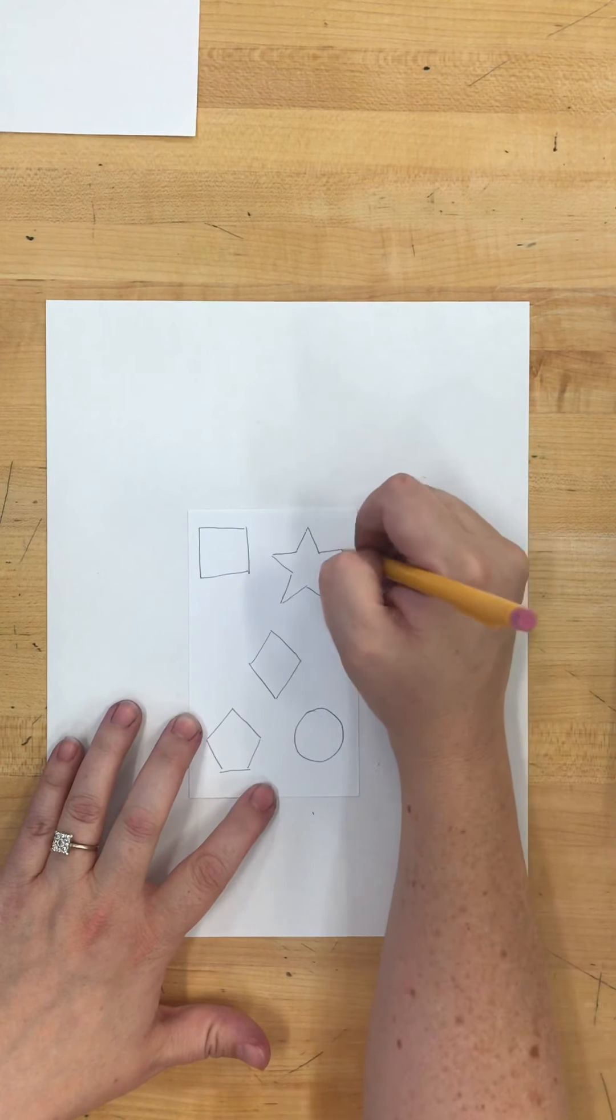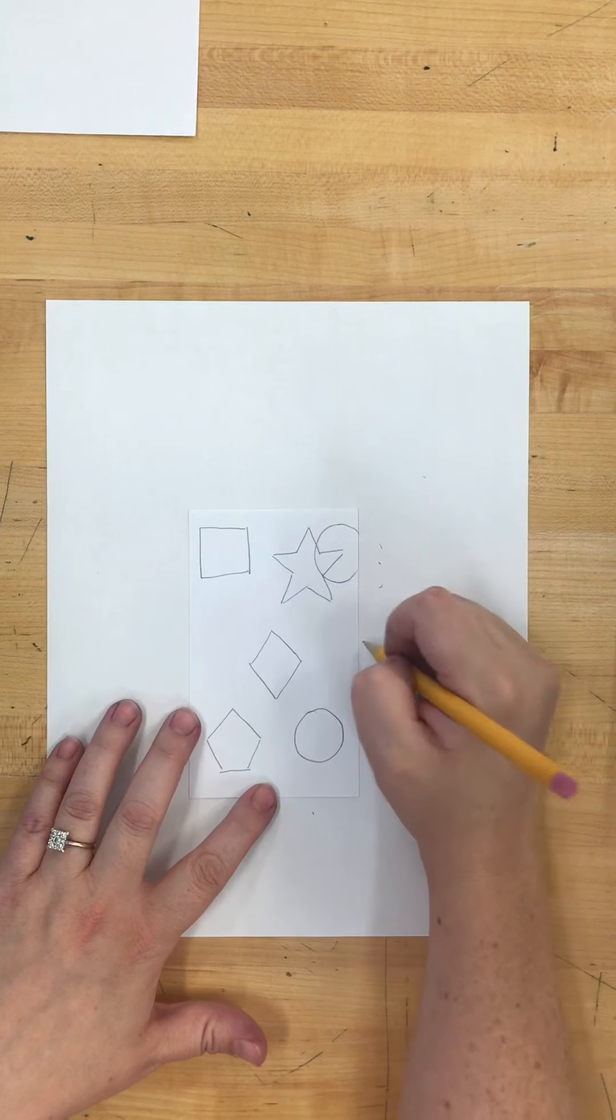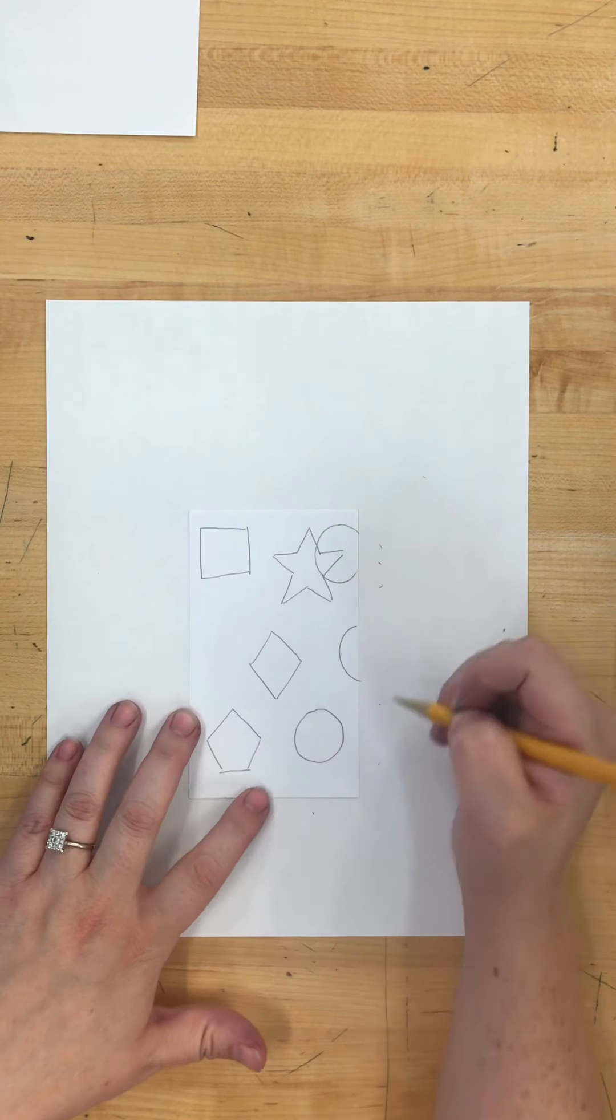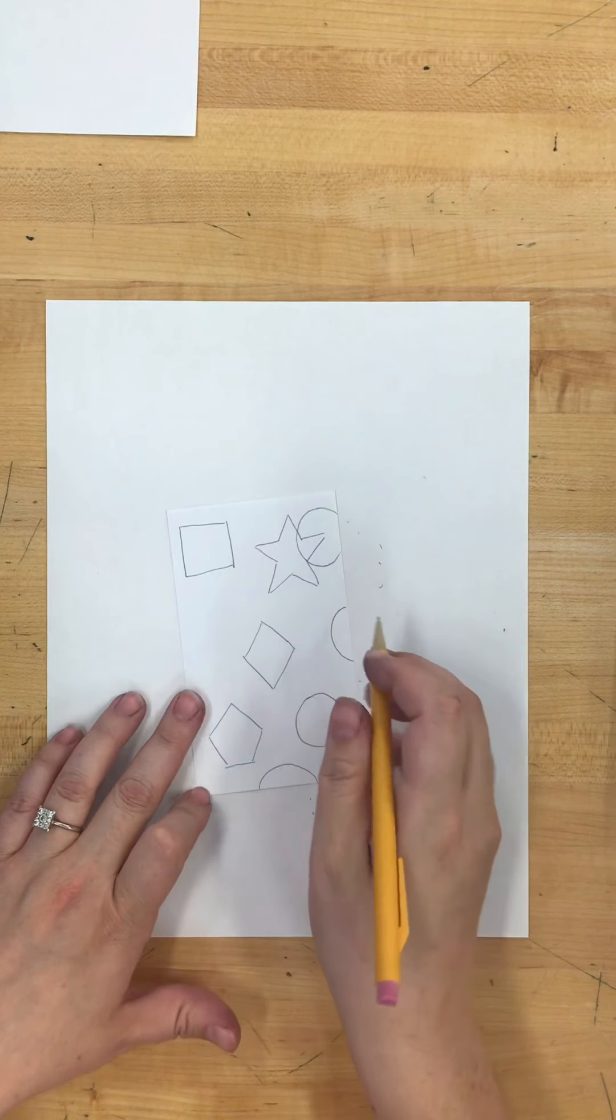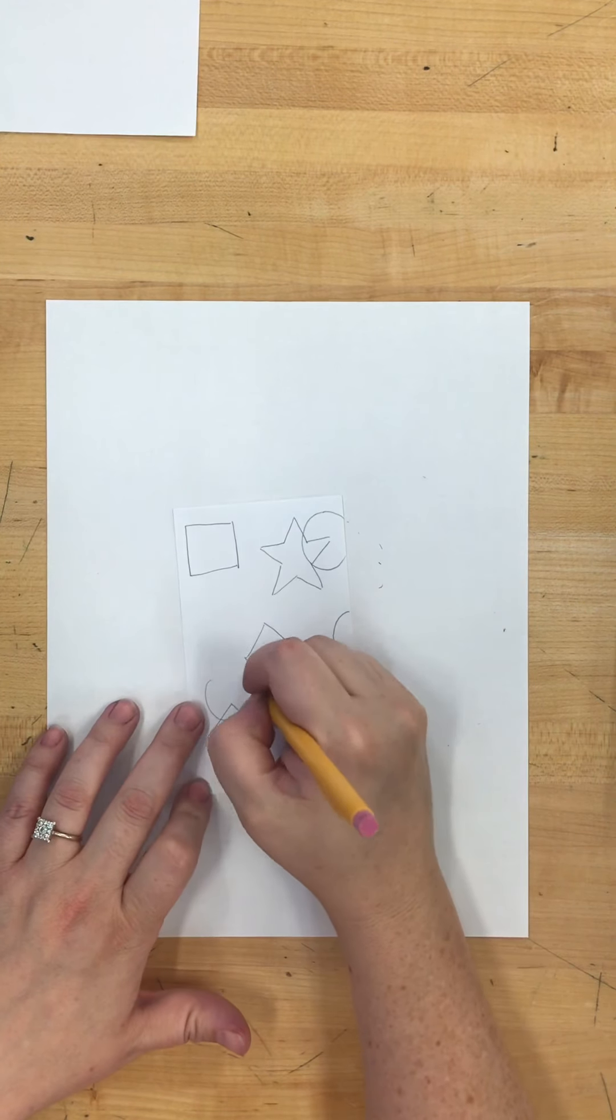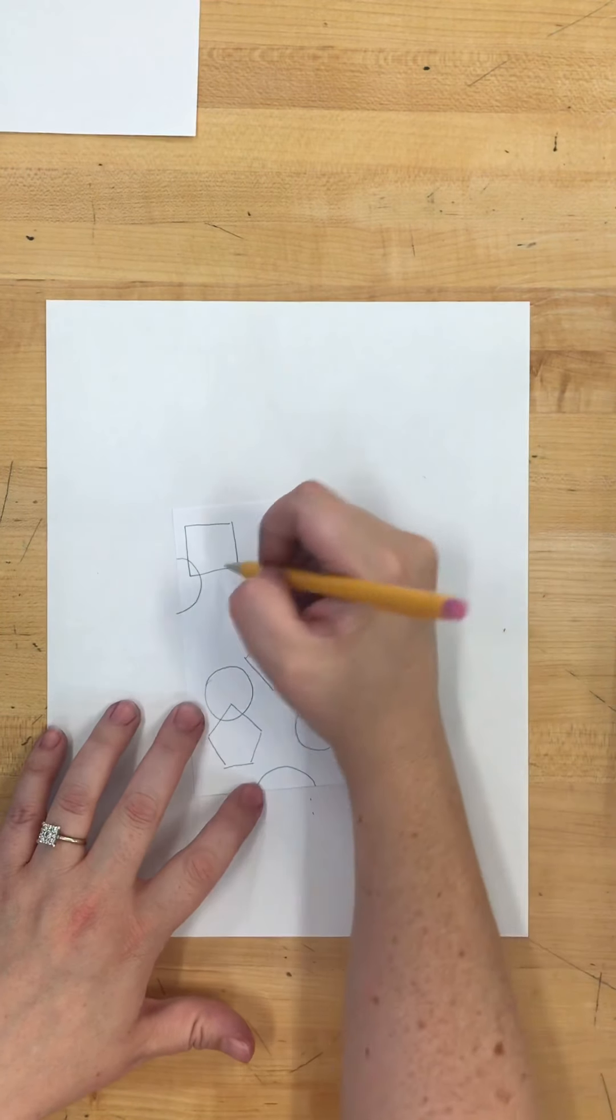So I'm going to take my circle and repeat it up here. You can do half circles, have it go off the page. Let's do a circle right there. Then I'm going to do some diamonds.